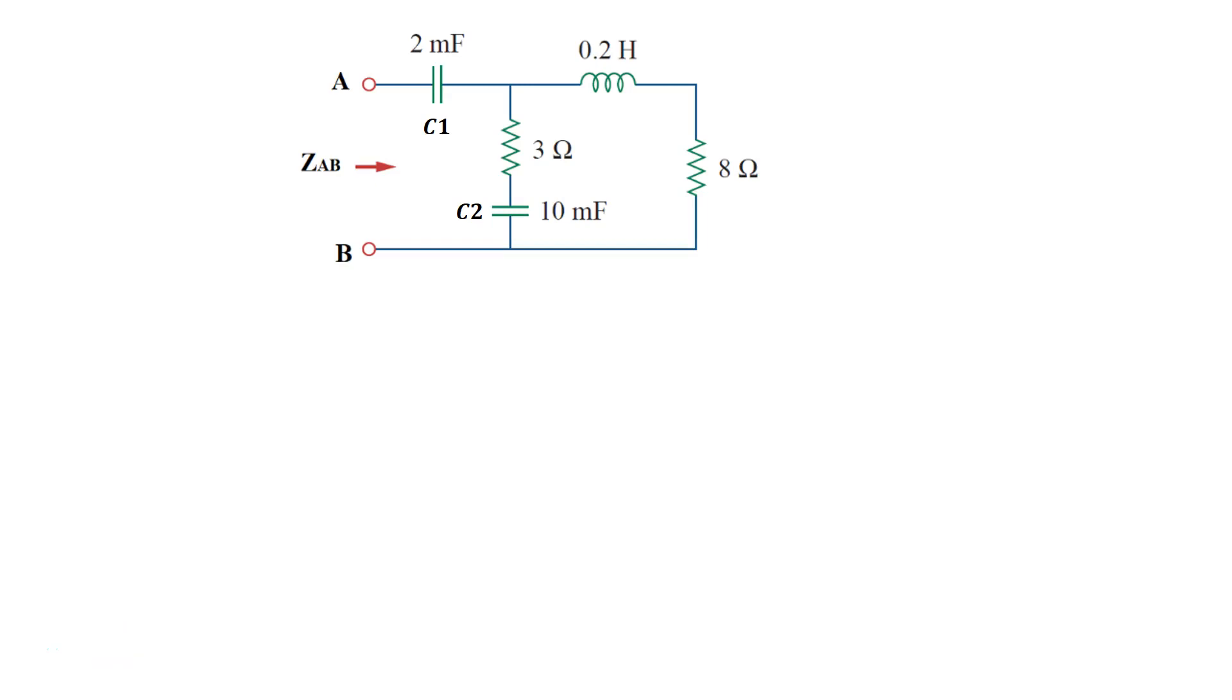Alright, so here in this problem we are asked to find the impedance seen from terminal AB in this resistor-capacitor-inductor network. For this particular circuit, we're given that omega, or the angular frequency of the sinusoidal source, is 50 radians per second.